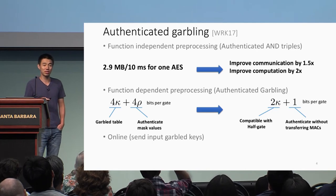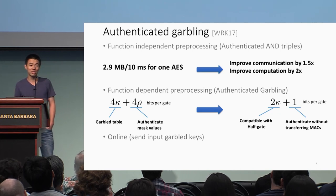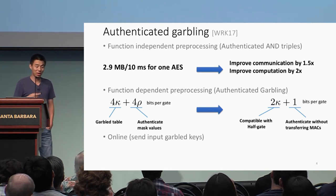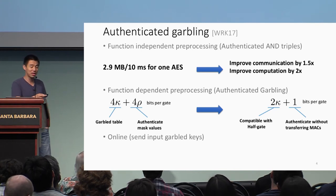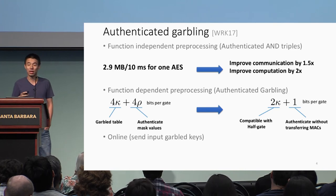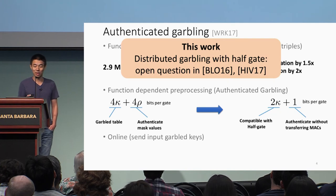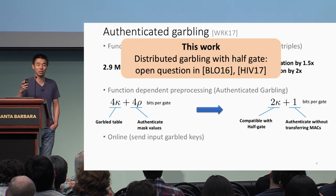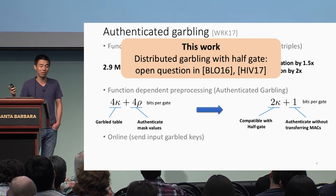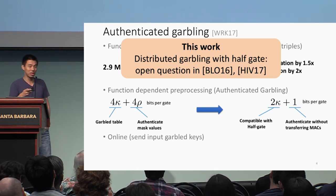In this work, we improved both the function-independent and function-dependent preprocessing, reducing communication and computation in the dependent phase by a large margin. We made the state-of-the-art half gate scheme compatible with authenticated garbling and stripped the MAC from four row bits down to just one bit. This partially solves an open problem mentioned in previous papers about making half gate compatible with distributed garbling — though only in the two-party setting.